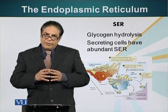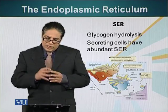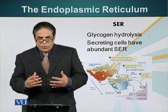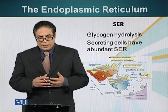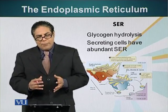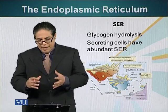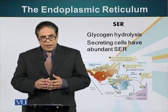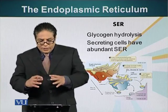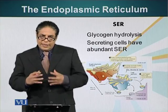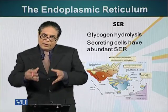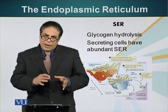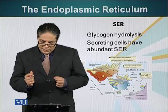Smooth endoplasmic reticulum is also very important in neutralizing harmful chemicals. For example, our liver cells have abundant smooth endoplasmic reticulum. It contains enzymes that can modify toxic molecules, thereby neutralizing them.